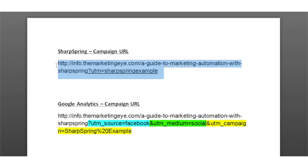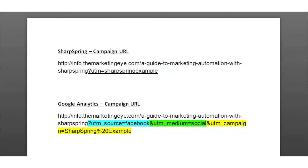Up here is a typical URL using SharpSpring, and at the bottom here we've got a Google Analytics campaign URL which we typically see. So we've got our source as Facebook, medium is Social, and our campaign in this example is 'SharpSpring example'.